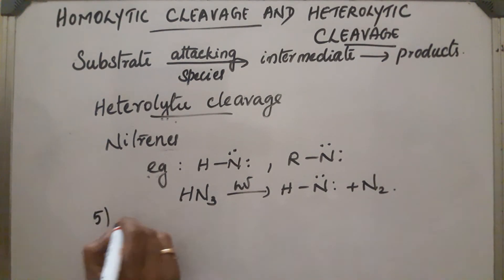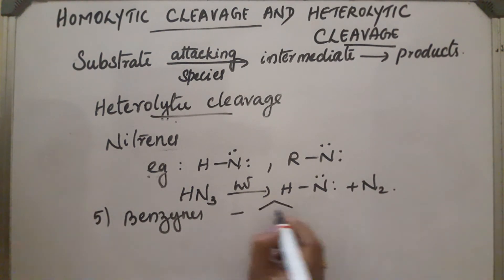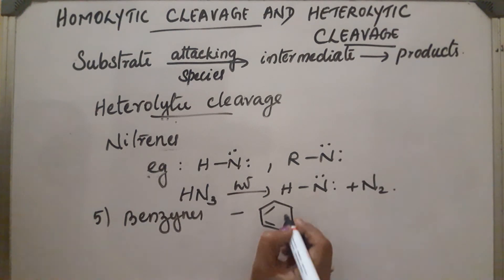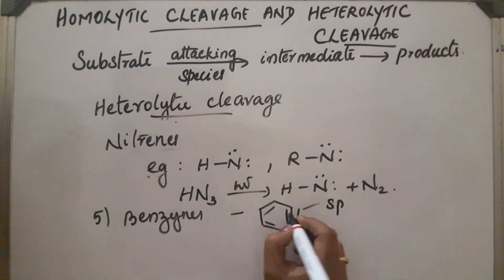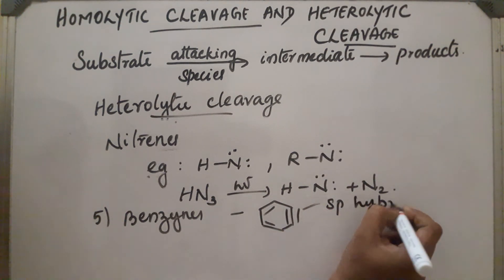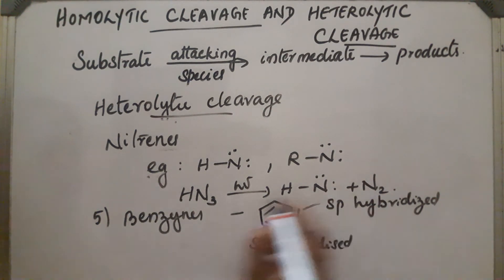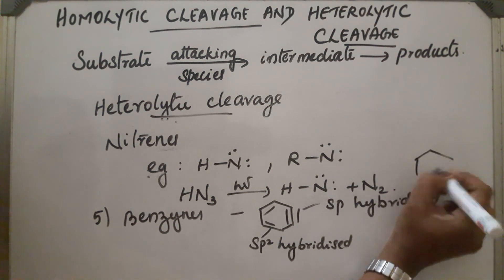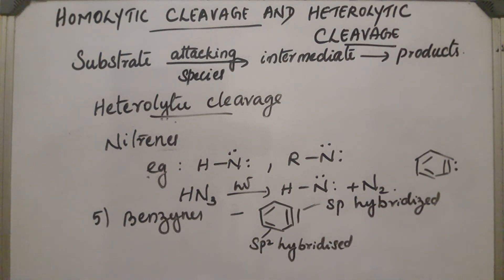The fifth intermediate is benzyne. The structure of benzyne has all C-C bonds as double bonds except one, which is a C≡C triple bond. The sp-hybridized carbons are at the triple bond, and all other carbons with double bonds are sp2 hybridized. This concludes the discussion of reaction intermediates in organic reactions.